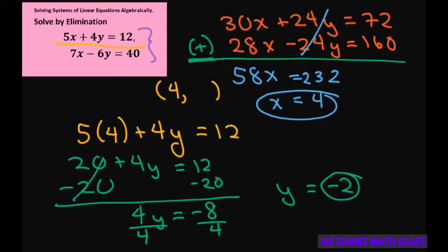You can always check by plugging in the X here and the negative 2 here. So if I plug in 7 times 4 minus 6 times negative 2, that should equal 40. This gives me 28 plus 12, which does equal 40. That means we did our problem correctly.